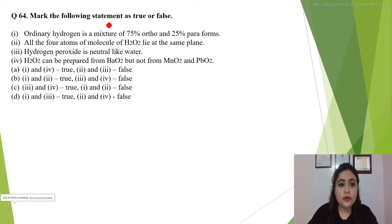Hi everyone, mark the following statement as true or false. Number 1, ordinary hydrogen is a mixture of 75% ortho and 25% paraforms.